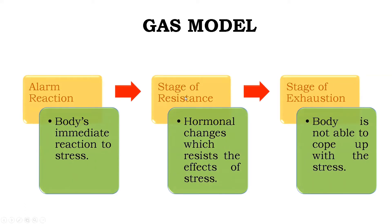If the stress is prolonged, the person enters the second stage: the Stage of Resistance. In this stage, certain hormonal changes take place in the body which fight the stressor — the body releases hormones that help us resist the effects of stress. If the person is not able to cope in the resistance stage, they enter the Stage of Exhaustion. In that stage, the body has lost all its resources to cope, and the person may get ill or be affected by disorders or diseases resulting from the stress.